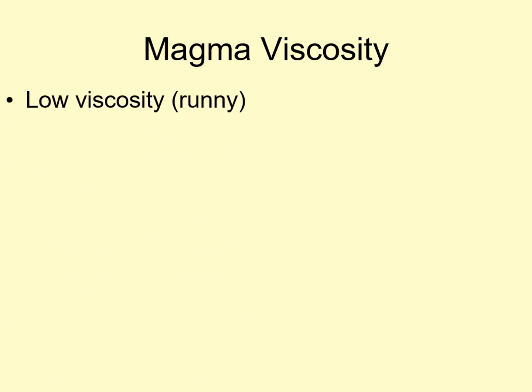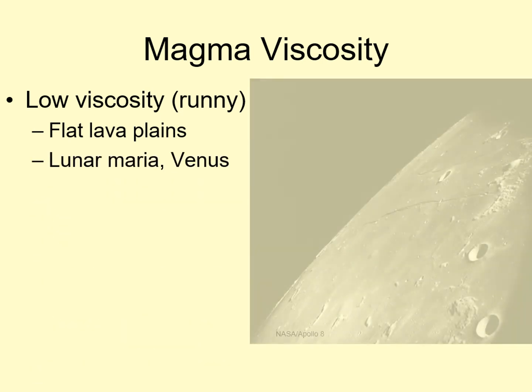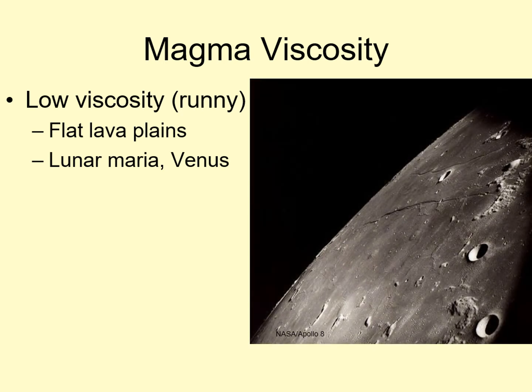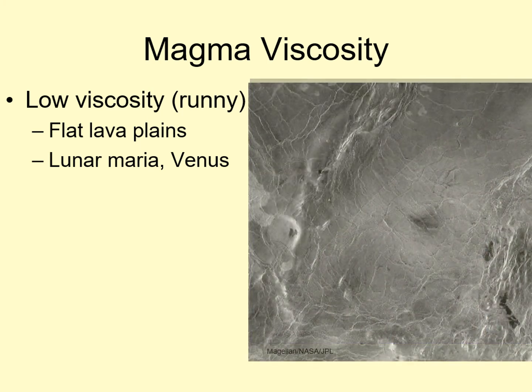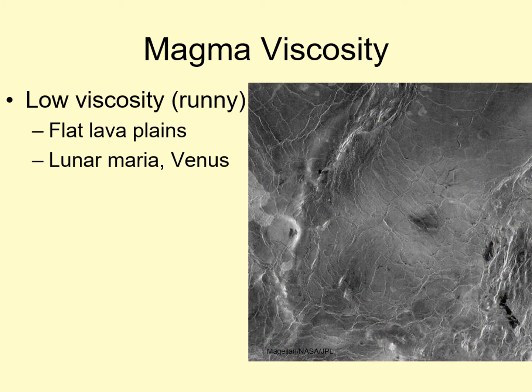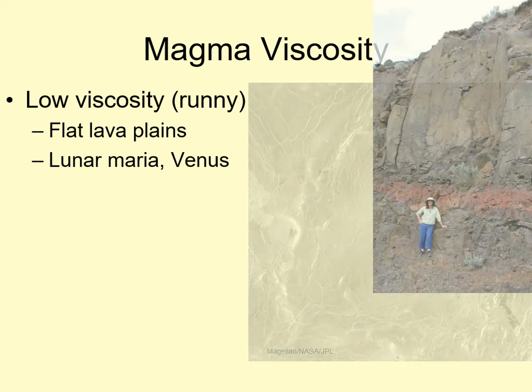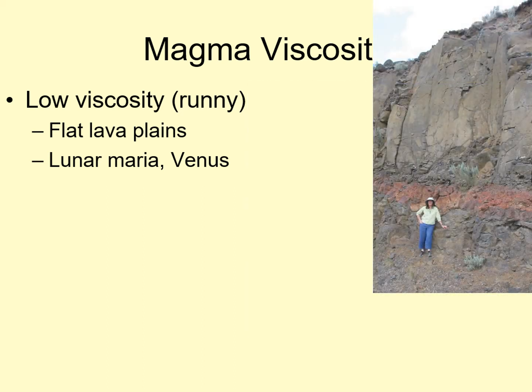Low viscosity magma is the most fluid. Water volcanoes and very fluid rock magma fit this category. Low viscosity magma produces flat lava plains and rivers of lava. We see examples of this in places like the lunar maria — the dark, flat regions on the near side of the moon — and on much of the surface of Venus. Much of the Earth's ocean crust is also made from low viscosity magma, as well as some features on continents. For example, the Columbia River Plateau in eastern Washington State is built up from many layers of low viscosity lava.